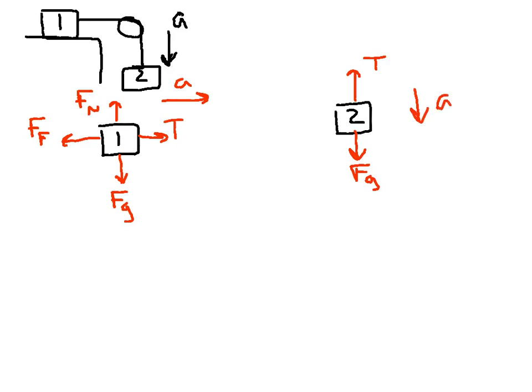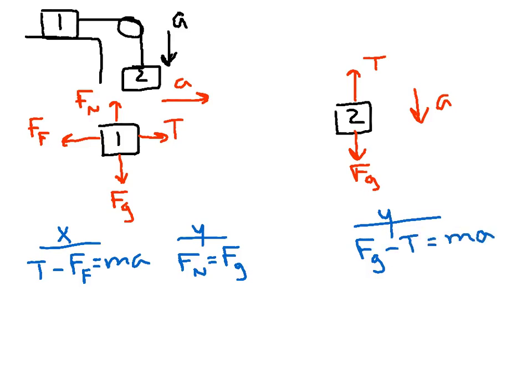Okay, so now for our net force equations. In the X direction we're going to have T minus force of friction equals MA. In the Y direction here we have no acceleration in the Y direction so we could say FN equals FG. Now on our box 2 over here we only have the Y direction, so we could say FG minus T equals MA. Now the things that are useful here, the tensions are equal and the accelerations are equal for both objects. So we can use that in doing multiple equations, multiple unknowns.